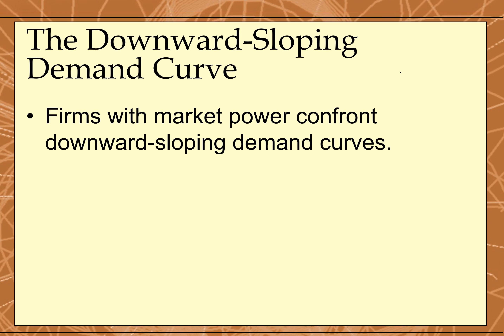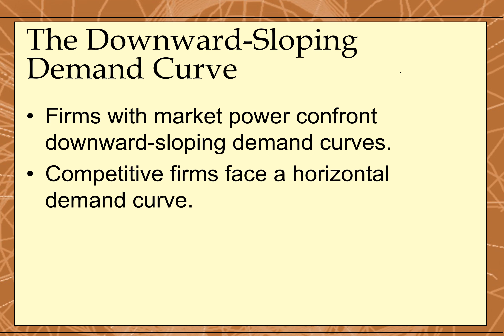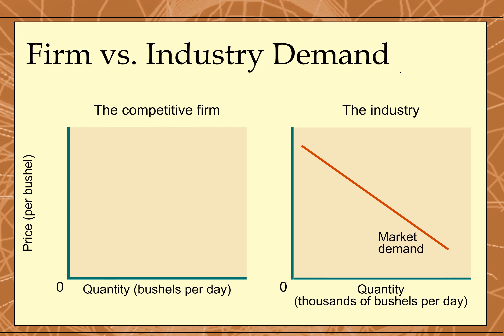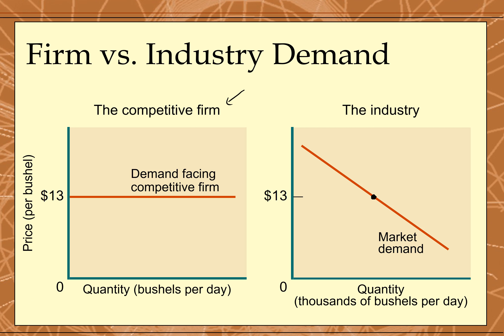Previously, we talked about the perfect competitor — they face a horizontal demand curve. Every firm faces a horizontal demand curve. The competitive firm or the perfectly competitive firm has a flat demand curve, while for the industry, the demand curve looks like a normal negatively-sloping demand curve. The flat portion basically tells you that customers are very, very sensitive to changes in price — so much so that if you just raise price a tiny bit, you sell nothing.